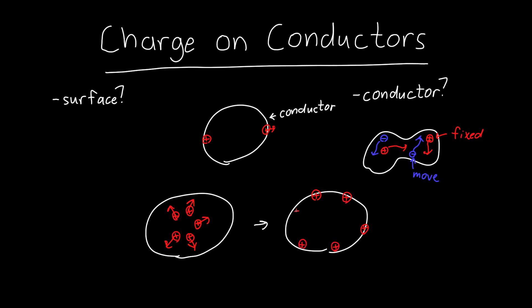And at some point, they'll reach an equilibrium where they don't want to move anymore. They're constrained by the outside surface of the conductor. So they can't leave the conductor, but they're as far away from their neighbors as they can be.